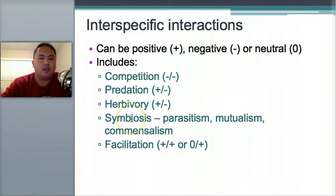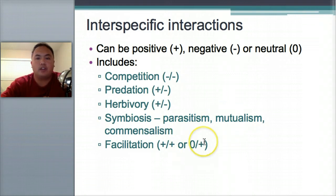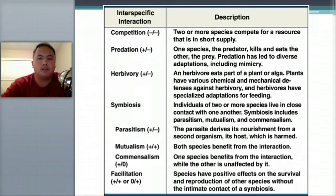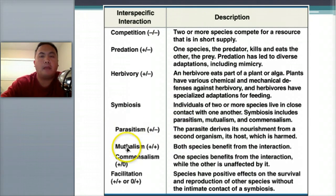We have symbiosis, which we'll talk about very quickly. We also have facilitation, where facilitation is good for both species, or neutral for one and good for another. Symbiosis has three different types: parasitism, mutualism, and commensalism.